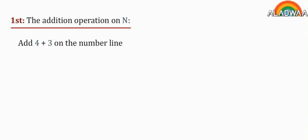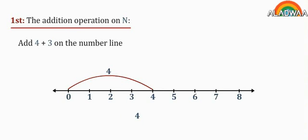To add 4 plus 3 on the number line, first move from 0 to 4. Then move another 3 steps on the right side. The answer will be 7 also.